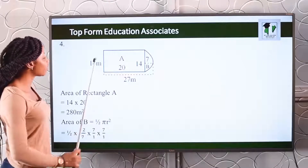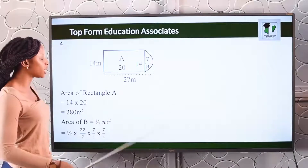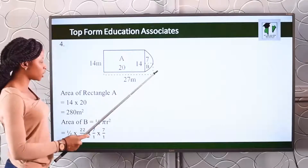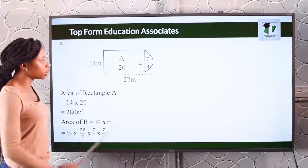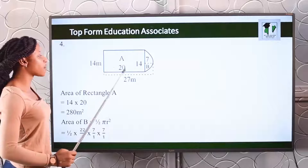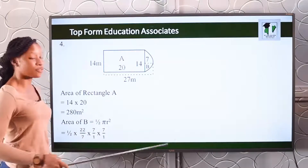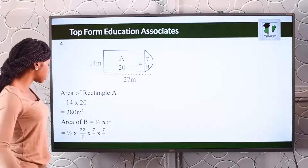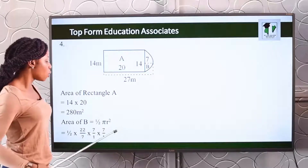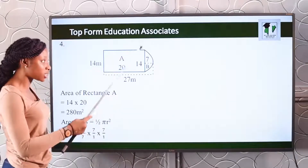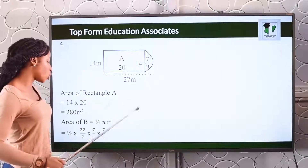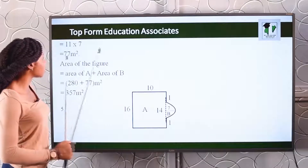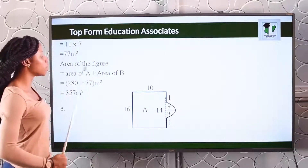Number four: we have a compound shape with a rectangle and a semicircle. The area of the rectangle is length times breadth, giving us 280 meters squared. For the semicircle, we use half pi r squared, inputting the values to get 77 meters squared.